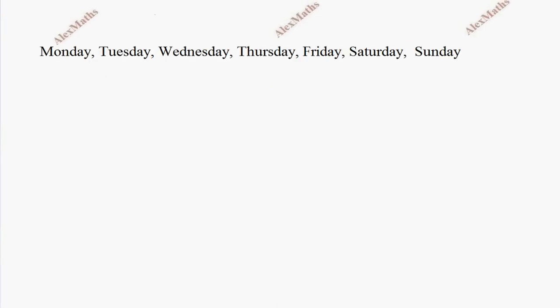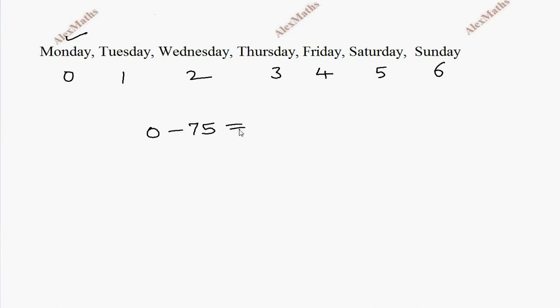Now the days are: Monday is 1, so it is 0, 1, 2, 3, 4, 5, 6. Monday is 75 days before. So 0 minus 75 is being put into the congruent mod 7 formula.